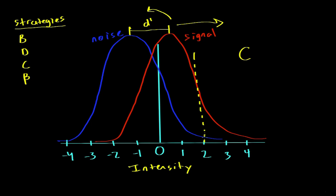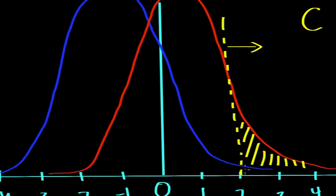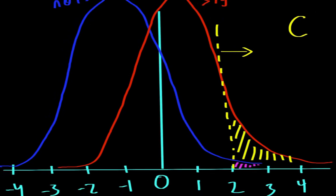So anything that is greater than 2, I will say yes to. And anything that's less than 2, I will say no to. So in that case, the probability of a hit is this area over here. And the probability of a false alarm is this area over here. So that would be the B strategy.